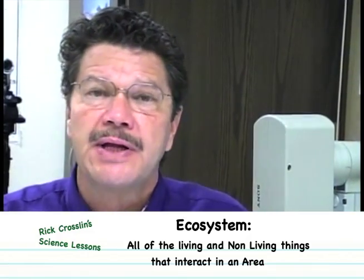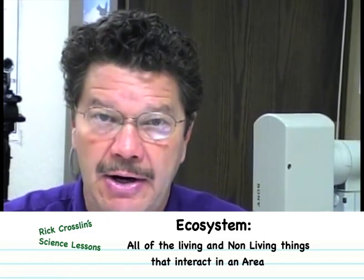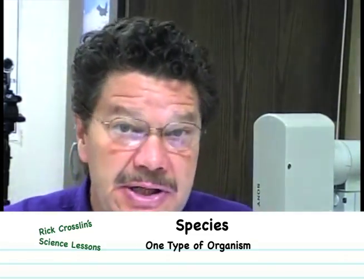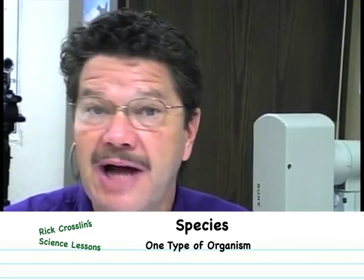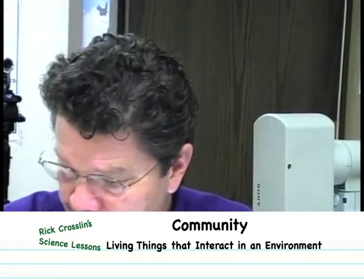You're going to learn about organisms and how organisms come together to form populations, and how populations come together to form ecosystems. An ecosystem is all the living and non-living things that interact in an area. You're going to learn about species — a species is one type of organism — and about communities, how they interact and live together. We can do that by taking a look at our Aquaterra column.